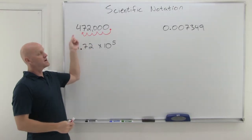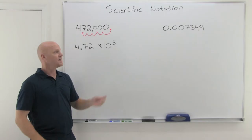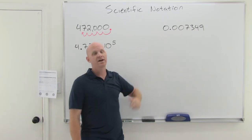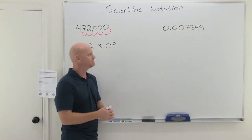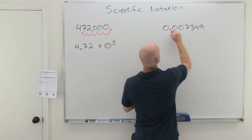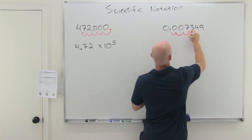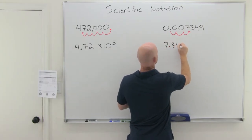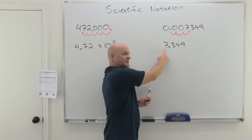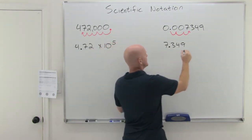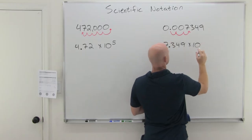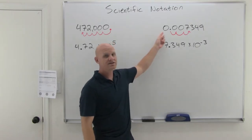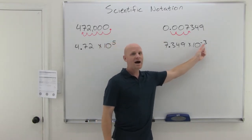When you've got large numbers — numbers much larger than 1 — you're going to end up with positive powers of 10. But when you've got numbers that are smaller than 1, you're going to end up with negative powers of 10. For this one here, we're going to move the decimal to the right instead — 1, 2, 3 places — and this is going to become 7.349. Notice we've got just one digit left of the decimal, as is proper for Scientific Notation, and then times 10 to the power of negative 3.